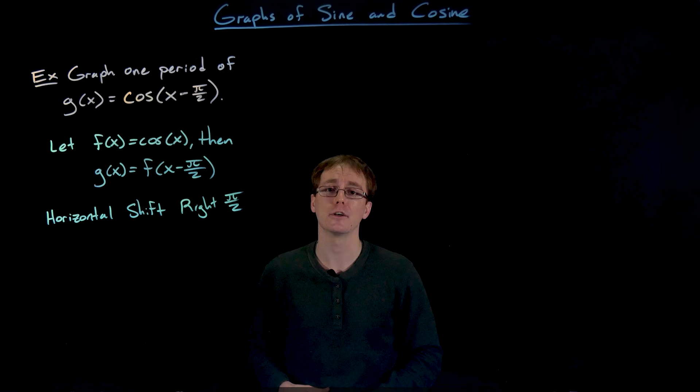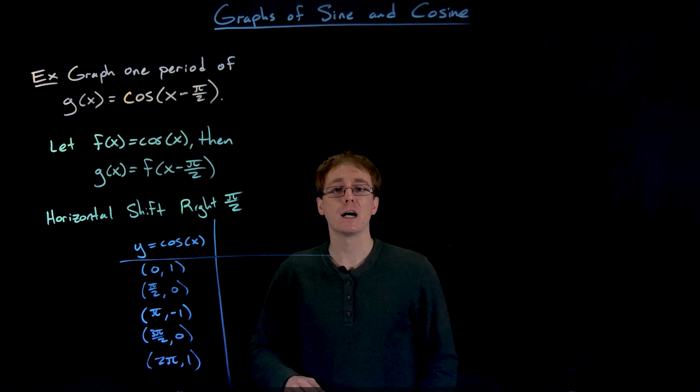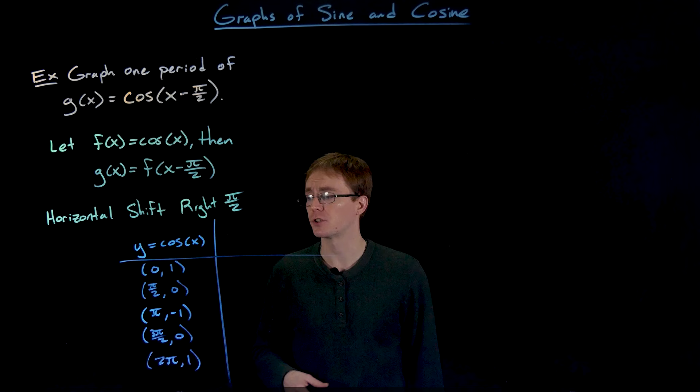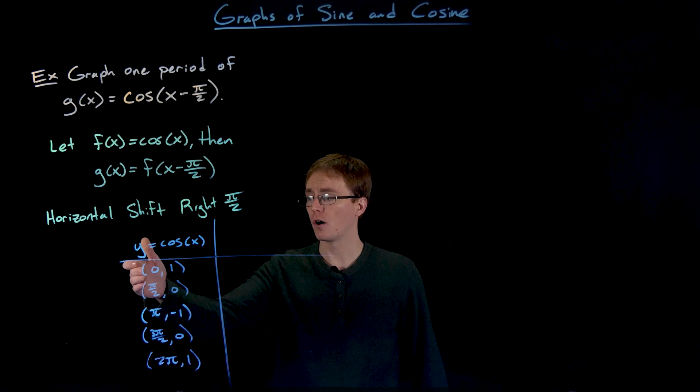When we first graphed that cosine function we used a lot more than five points, but that was just to get general shape and idea of what that function looks like. When we're actually graphing our sine or cosine functions, remember we only really need five points, and the five key points that I always like to use for cosine function from that first period are (0, 1) that starting point at the maximum, (π/2, 0) that's that midline or equilibrium point,